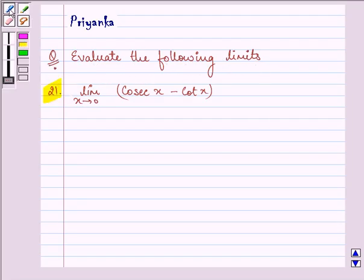Now here the limit which is given to us is limit x approaches 0, cosec x minus cot x. We need to find out the value of this limit.